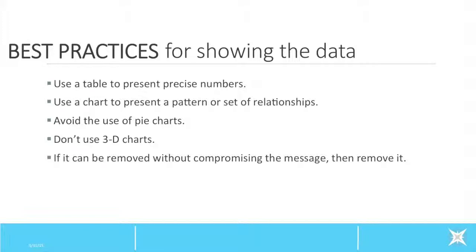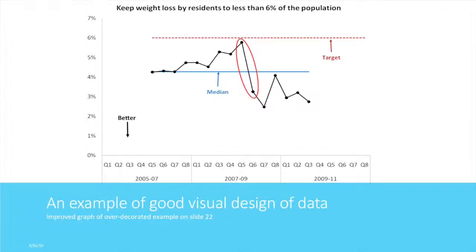When you are done, look at it again and ask yourself, does the table or graph clearly communicate my point? Here is an example of good visual design. You can see the target, the median performance range, and identify where improvement began.